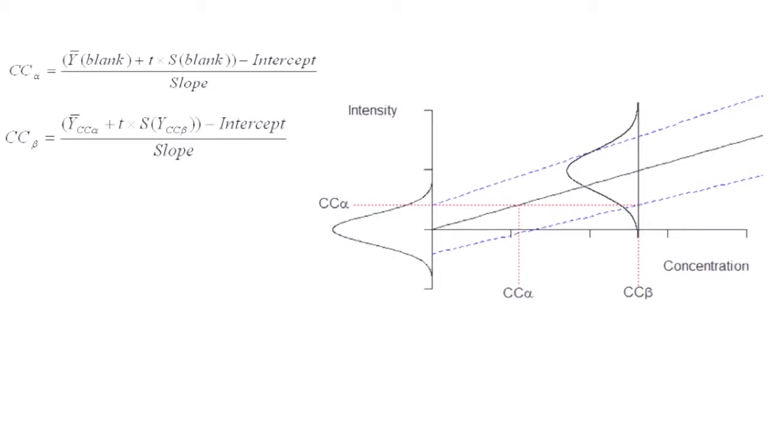Now we can find the CCβ value by first summing the CCα value in the intensity scale to the standard deviation times the student coefficient.